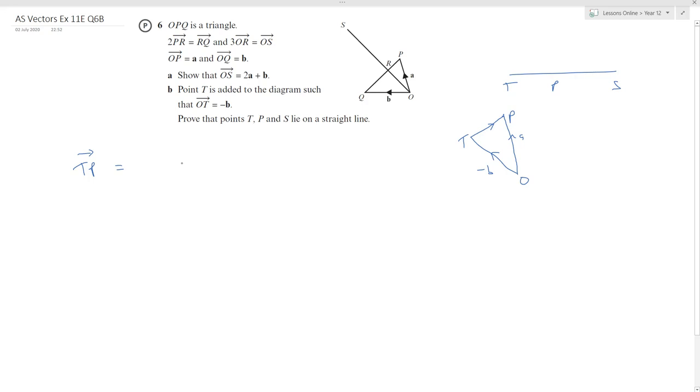TP is given by, to go from T to P, I can go back so negative OT plus OP. Negative OT is minus minus B plus A, so that's given A plus B.